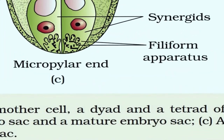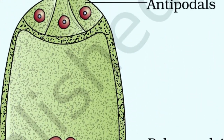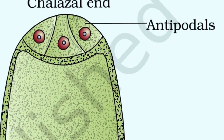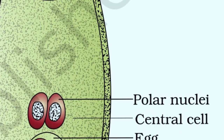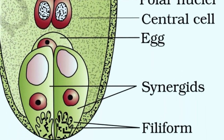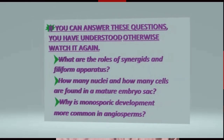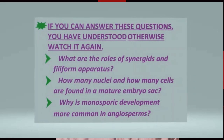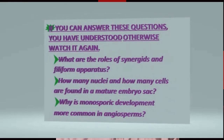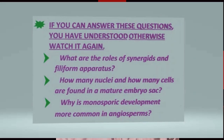At the micropylar end is the egg apparatus, which contains two synergids and one egg cell. At the opposite end are three antipodal cells. The central cell has two nuclei called polar nuclei. The synergids have filiform apparatuses that guide the pollen tube to the egg. Review questions: What is the role of synergids and filiform apparatuses? How many nuclei and how many cells are found in a mature embryo sac?